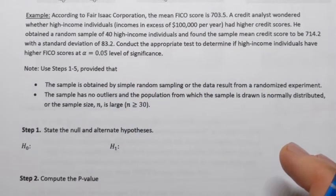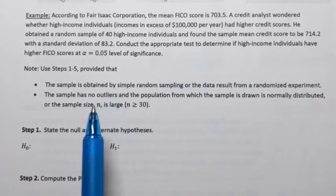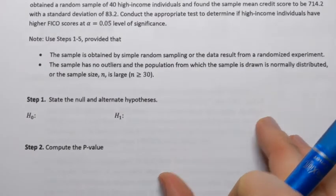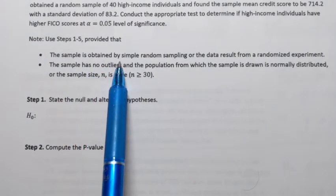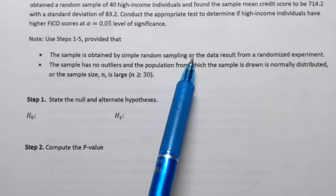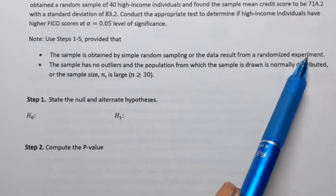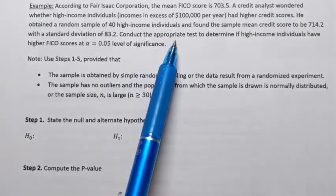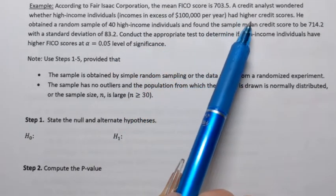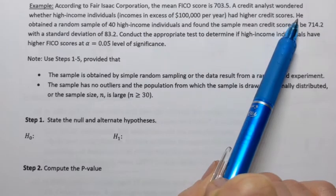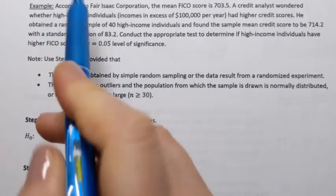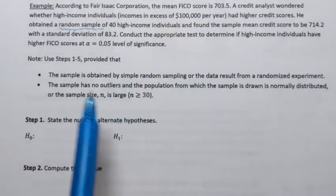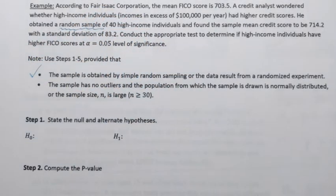Let's look at the step that we need to take to conduct the hypothesis testing. So first, we need to verify conditions. There are two conditions here. First, that the sample has to be obtained by simple random sampling, or the data result from a randomized experiment. Let's see if we can find that information in the description. Okay, right here. He obtained a random sample of 40 high-income individuals. So yes, that condition satisfied.